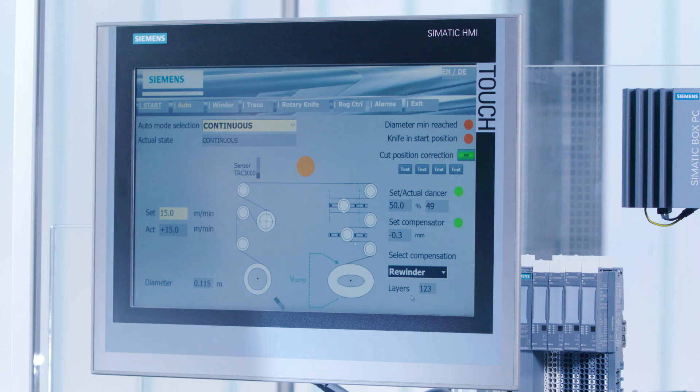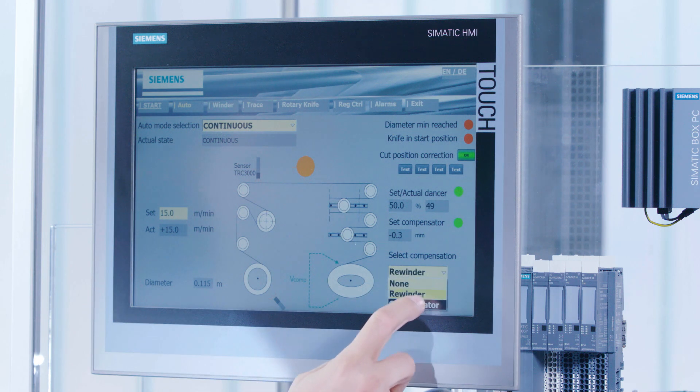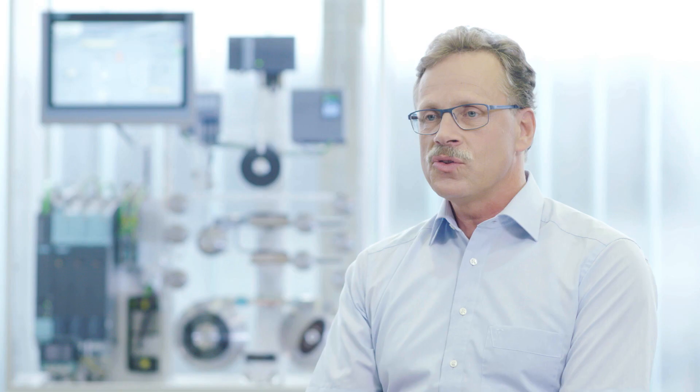The solution offered by Siemens has two decisive advantages. Firstly, extremely high speeds are possible with the web length compensation feature. Secondly, the web tension can be precisely predefined at every point and angle of the winder, resulting in high-quality batteries.